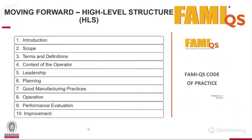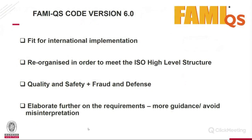The standard now in version 6 complies with the high-level structure of ISO and has 10 chapters — the same structure as all standards derived from ISO 9001. The standard is now fit for international implementation. It was reorganized to meet the high-level structure, and the approach covers quality, safety, and also fraud and defense — two new pillars we will examine. The text was also elaborated with more detailed requirements to provide guidance and avoid misinterpretation.